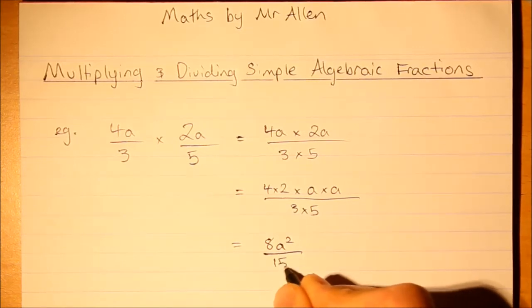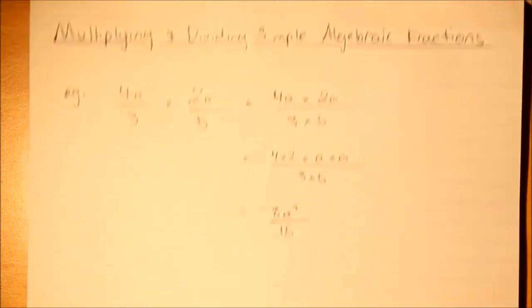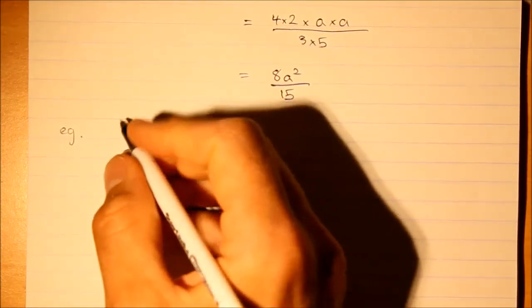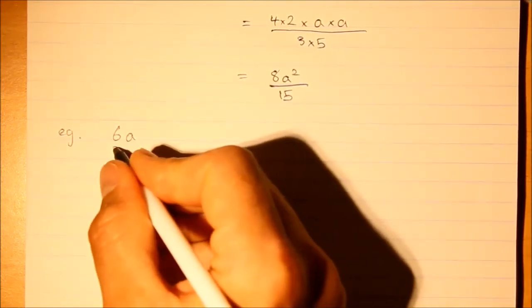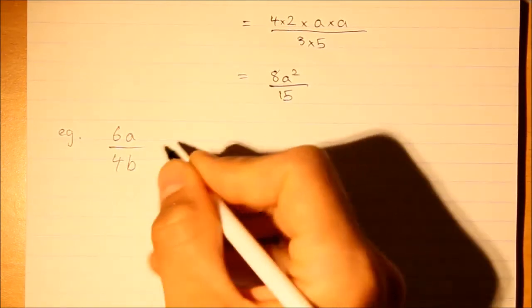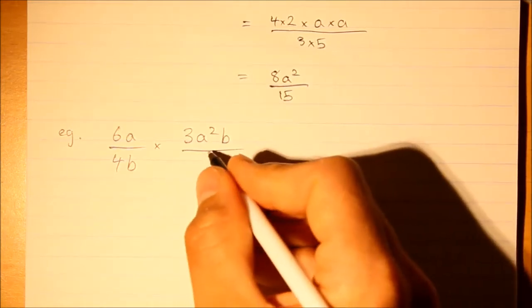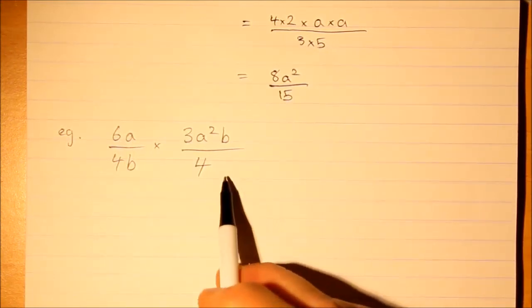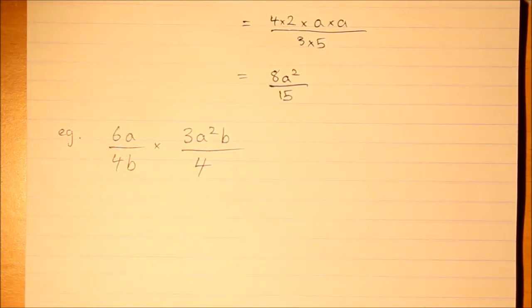Now let's have a look at another one. And I'll make that 6a over 4b times 3a squared b over 4. Now we could go ahead here and multiply the tops and the bottoms, but it's always easier if you cancel or simplify any common factors before multiplying.